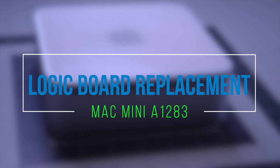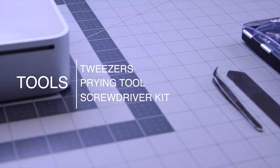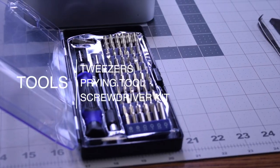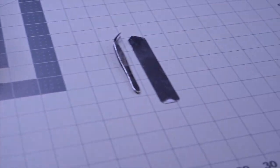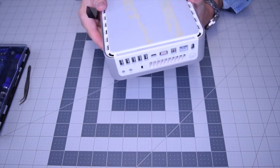Logic board replacement for our Mac Mini A1283. The tools we're going to need are tweezers, a prying tool, and a screwdriver kit with a flathead and a Phillips head screwdriver. Go ahead and start by flipping over the Mac.